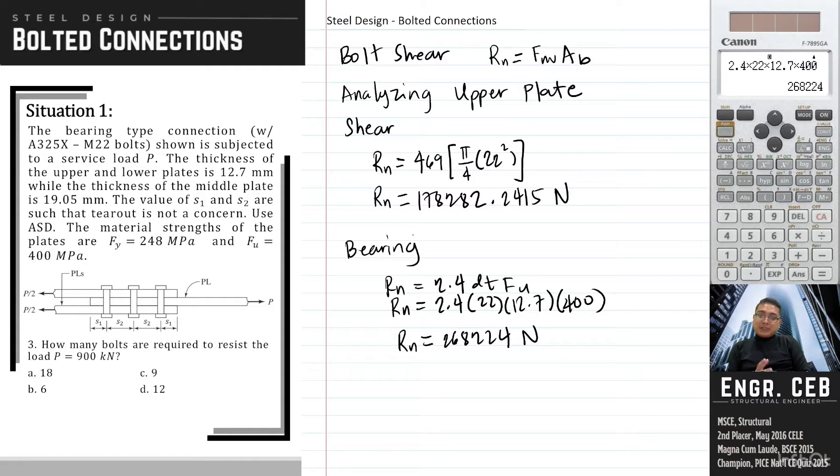So comparing the capacity of the bolt in shear and bearing, the governing limit state for the bolts is the bolt shear. Therefore, we will use this as the capacity of one bolt. So for the upper plate, we will now compare the demand and the capacity. Take note, in order to ensure that we have a safe design, the demand should be less than the capacity.